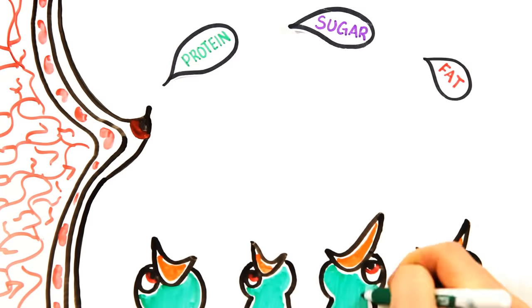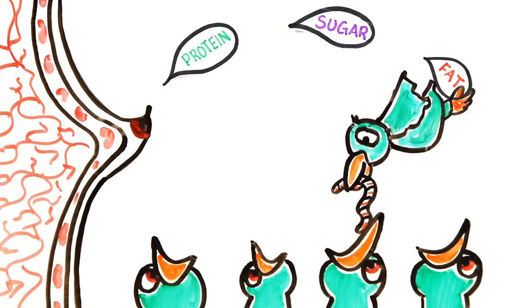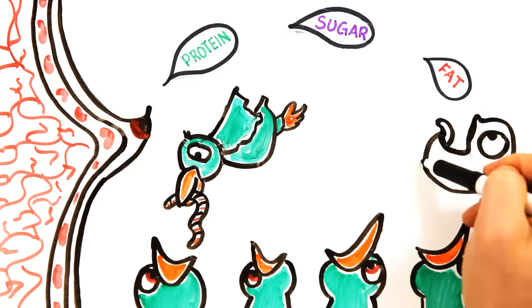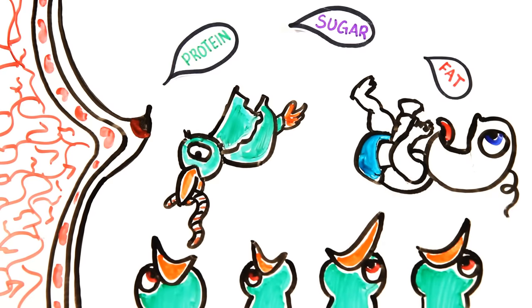Unlike birds or reptiles whose young are dependent on parents to bring them outside food such as insects, mammals from the word mammary access their nutrition at a young age from the secretion of a mother's milk.